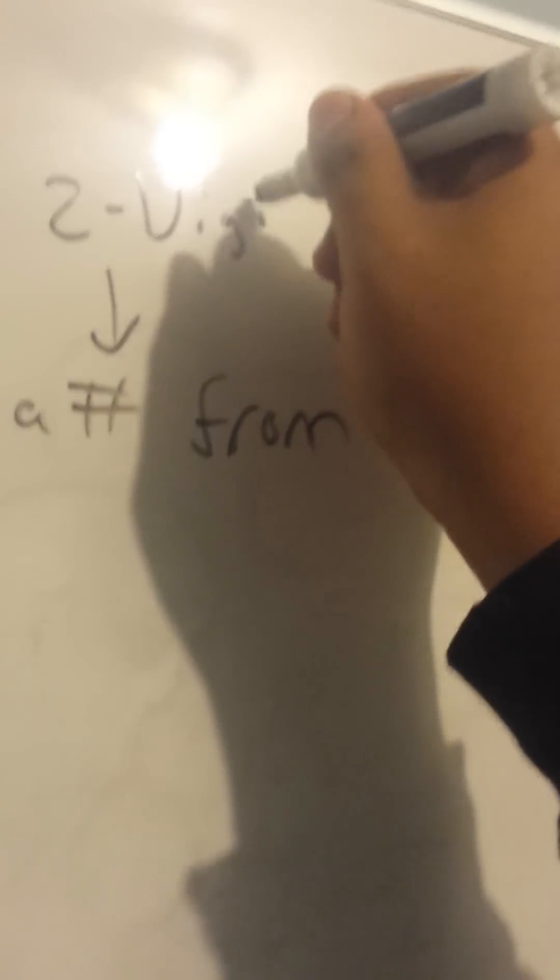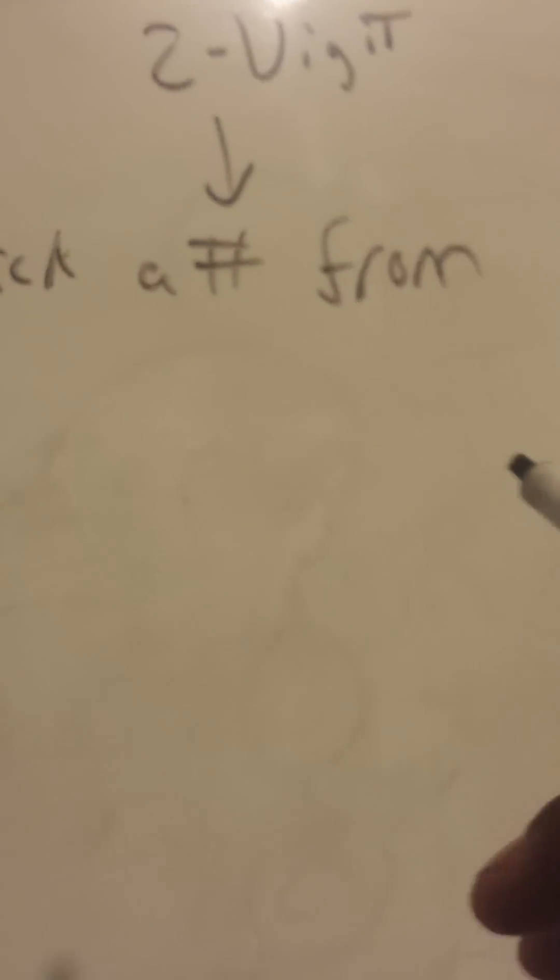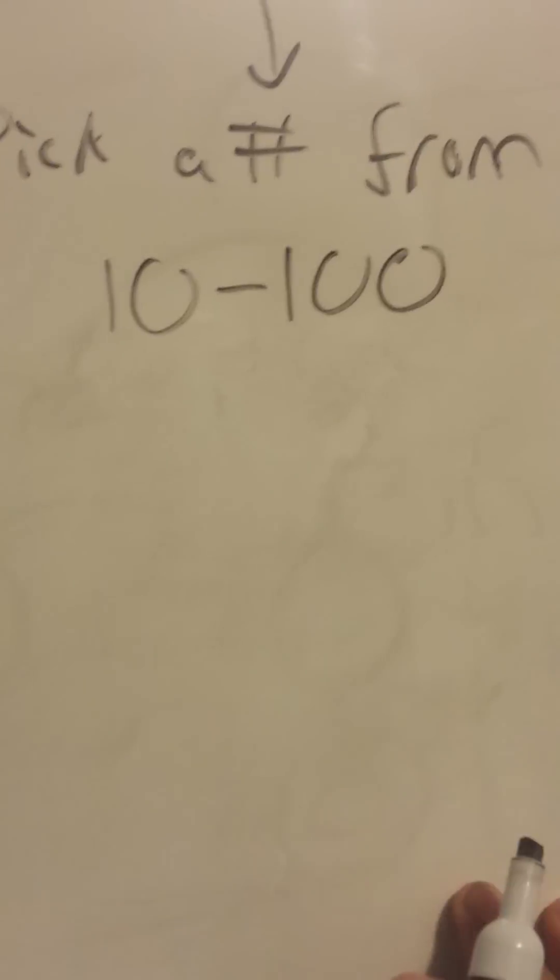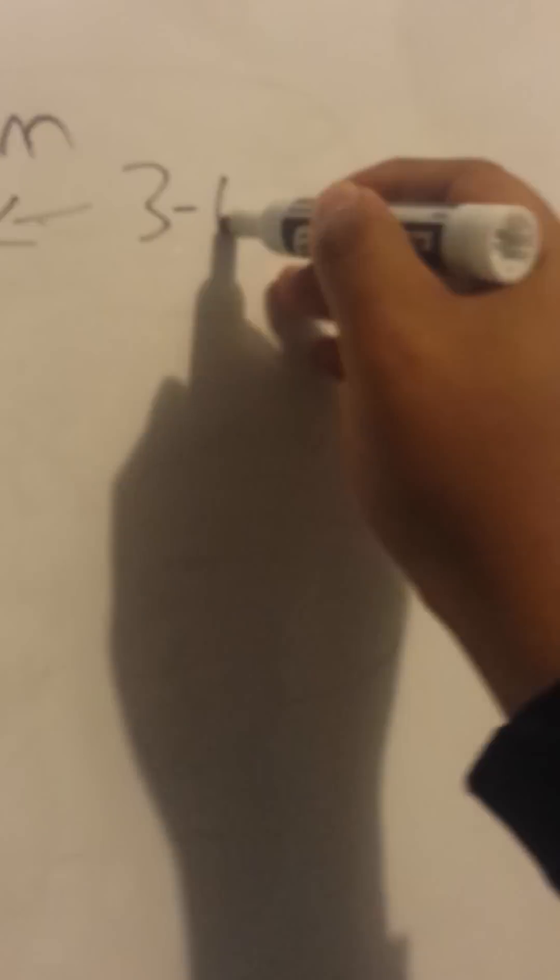That was just a quick introduction to modulus. Now, the guy's trick: he says pick a two-digit number. He says from 10 to 100, although he shouldn't say 100 since that's three digits — so really from 10 to 99.